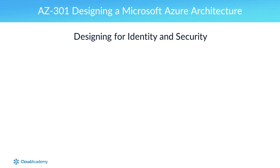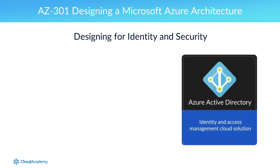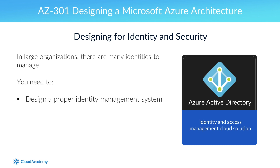The next section is on designing for identity and security. Not surprisingly, the focus is on how to use Azure Active Directory. In a large organization, there are many identities to manage. This includes not only users, but also applications. To manage them effectively and securely, you need to design a proper identity management system. You also need to set up authentication for all of these identities, usually including single sign-on for your users.